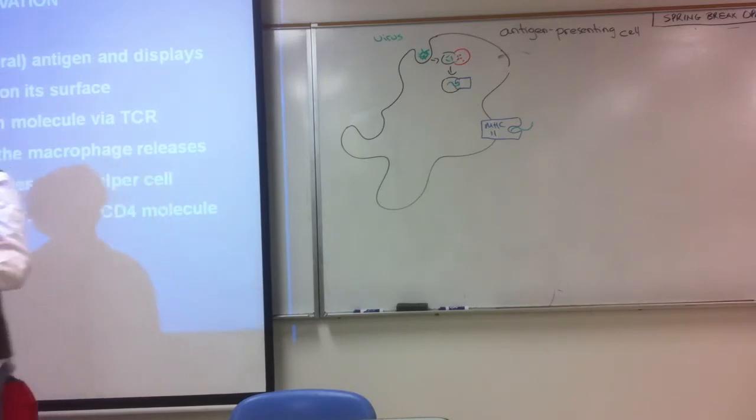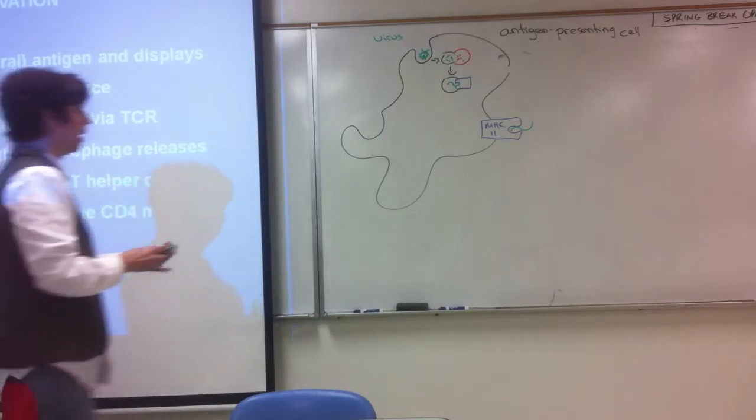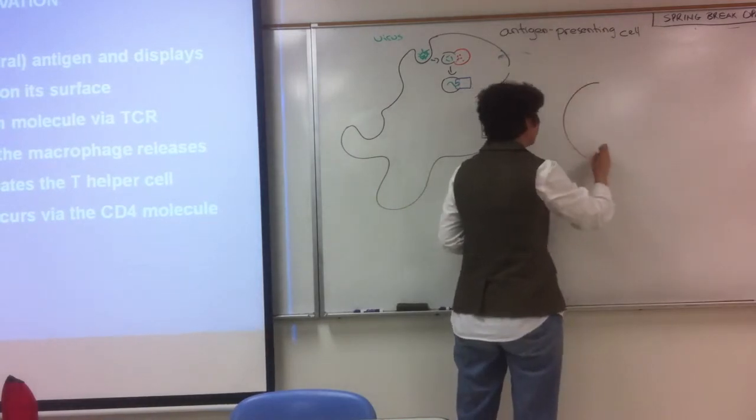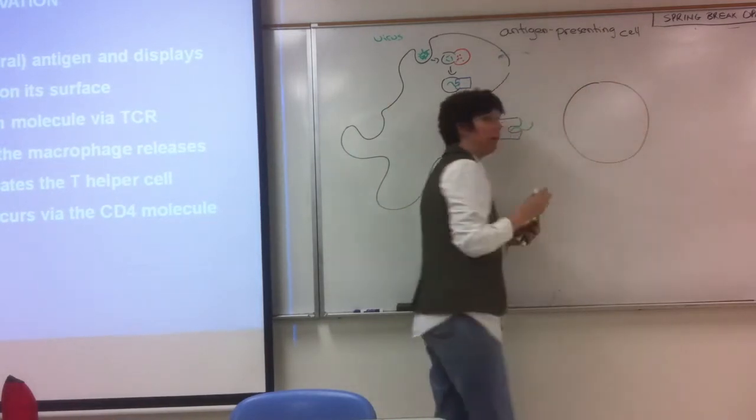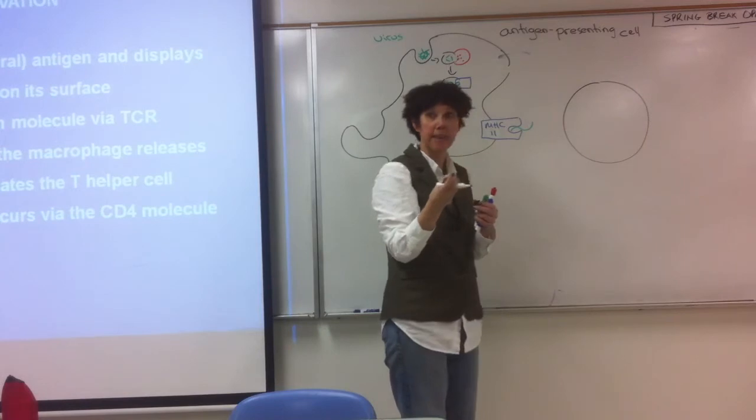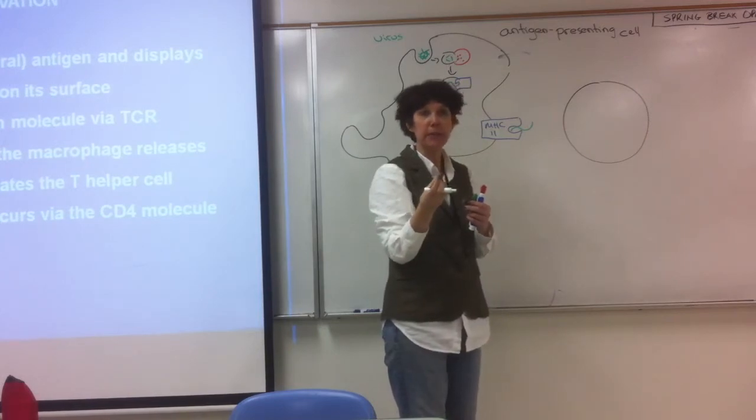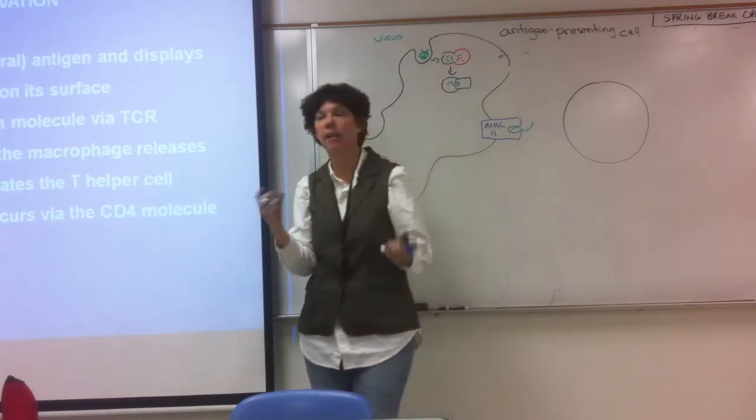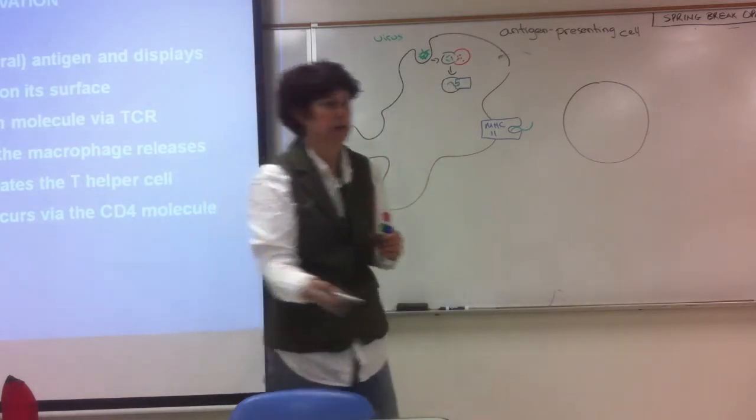So, now, is this going to interact with a T-helper or a T-killer cell? It's an MHC-2 molecule. T-helper cell. So, T-helper cells, all of our T-cells and B-cells, have on their surface receptors. And the receptors on the T-cells are very similar to antibodies. And on the B-cells, they are antibodies.